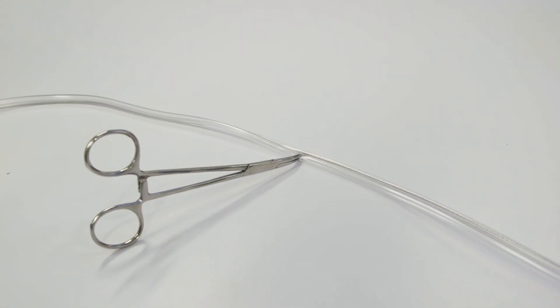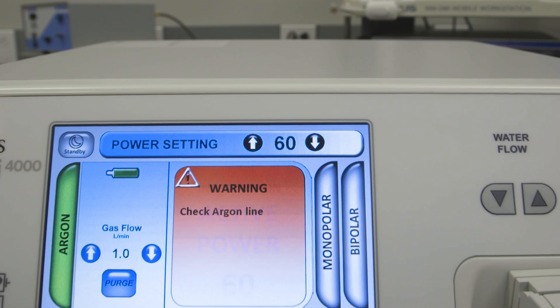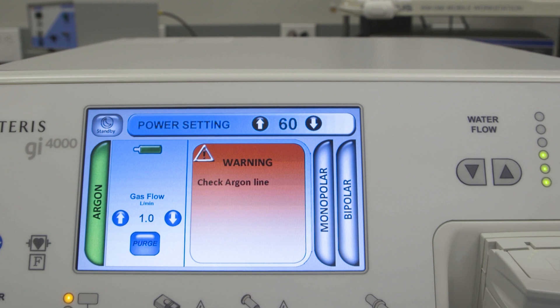The GI-4000 will sense pressure building in the argon tube set and trigger the warning when argon line pressure has exceeded the threshold set by the manufacturer.